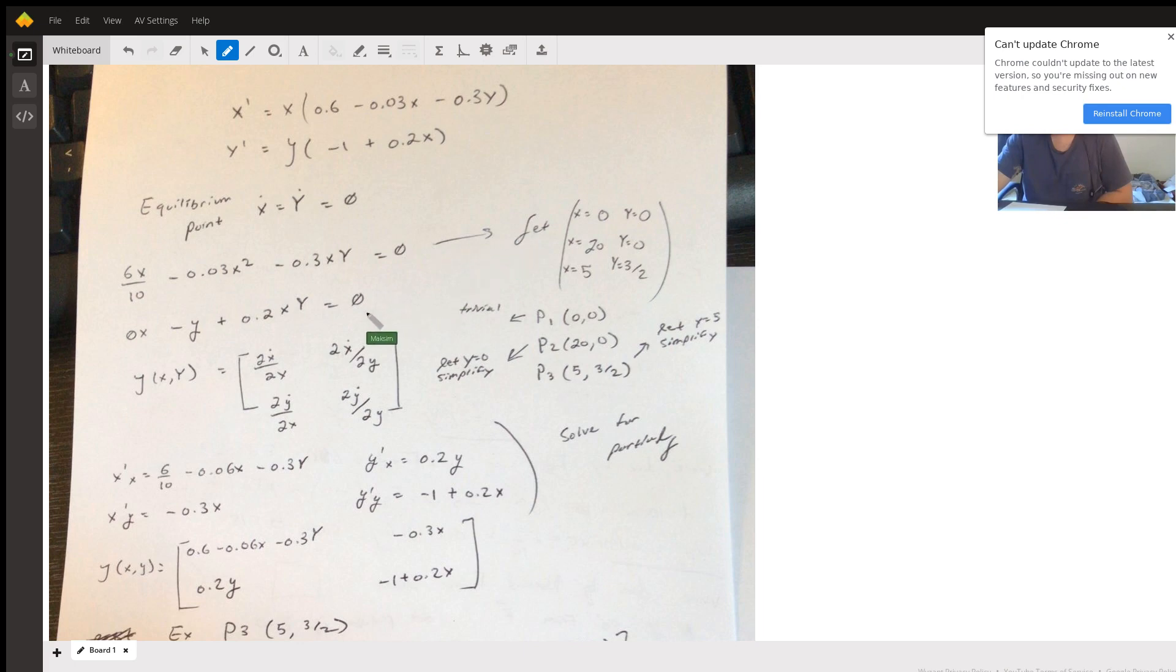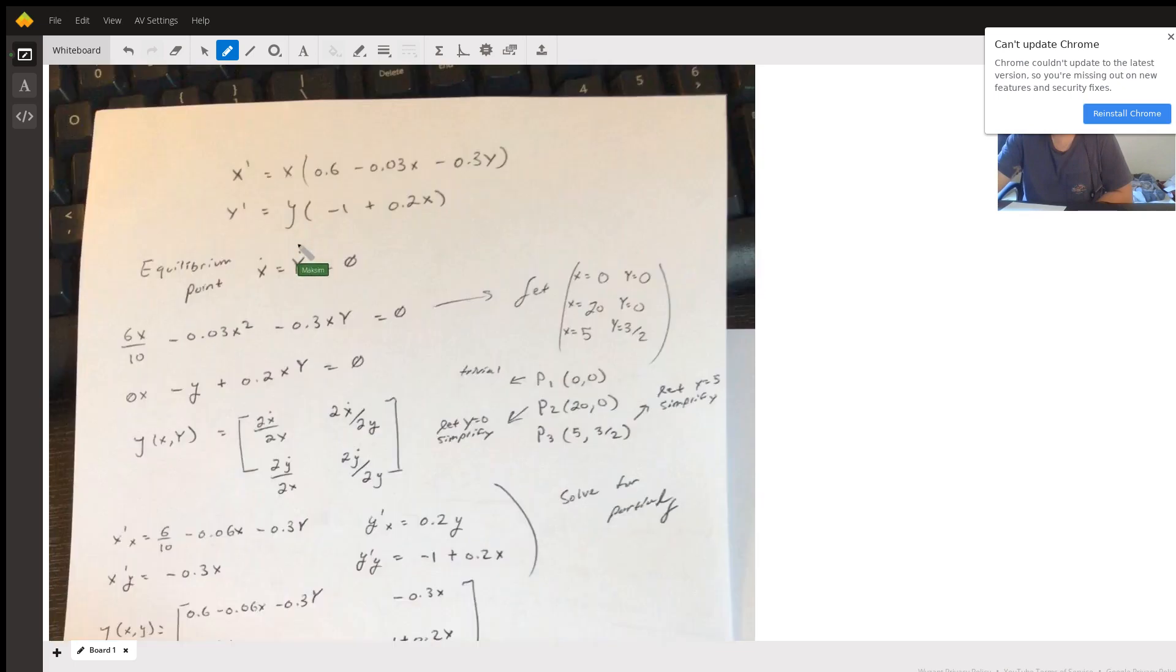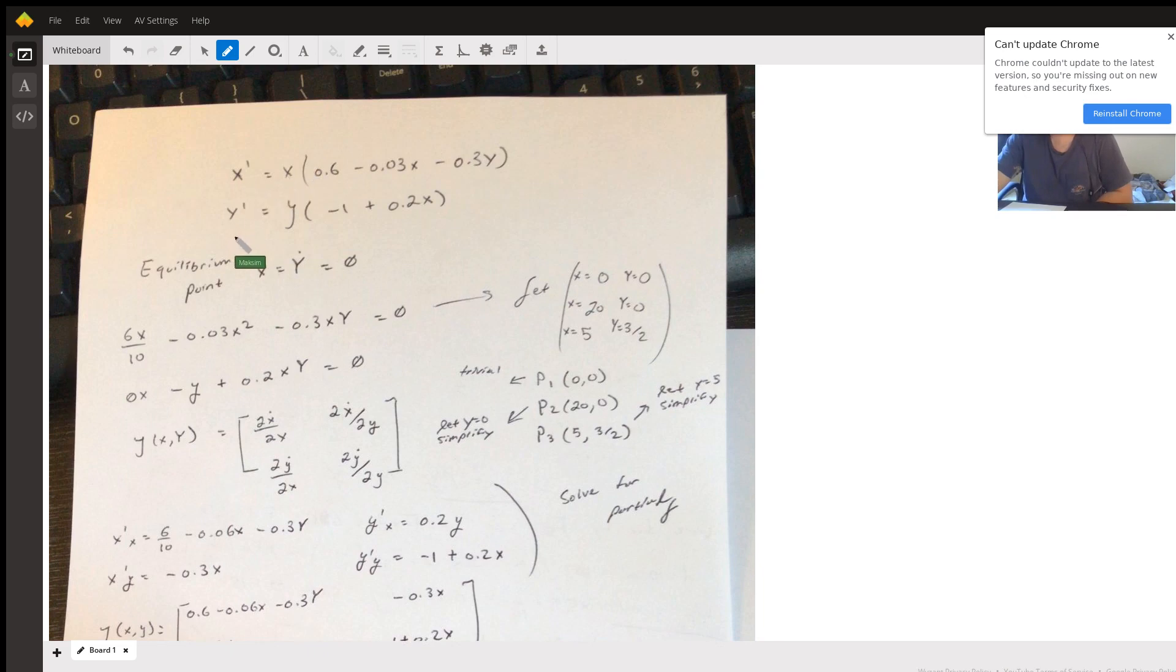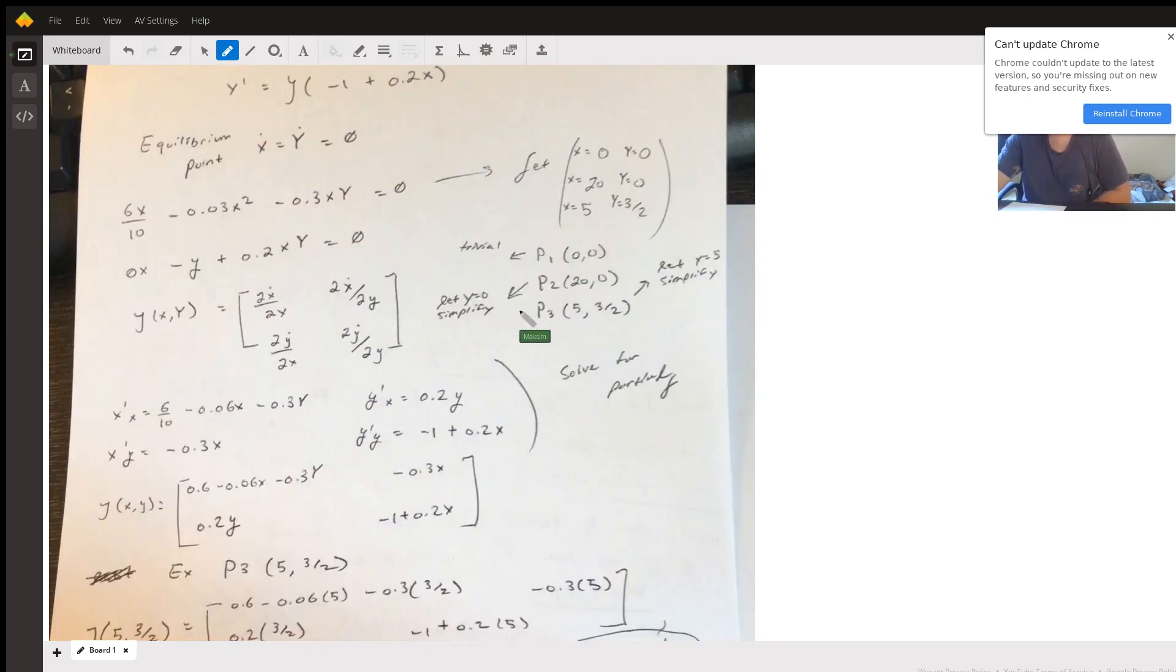Following this, we're going to need to use the Jacobian equation by definition for a 2 by 2. If we had a z prime this would be a 3 by 3 matrix, it's always n by n, but we need to find the partial derivative in terms of x and y for both x prime and y prime.